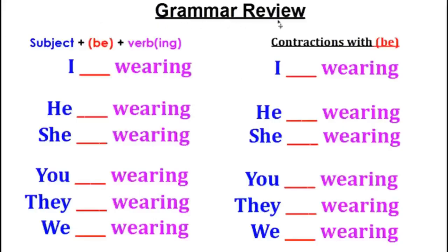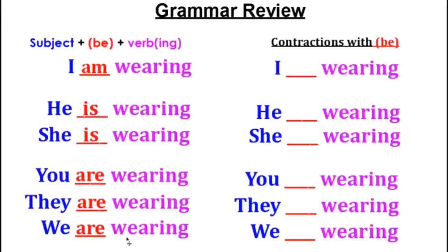Grammar review — the verb 'be' for each subject: I am wearing, he is wearing, she is wearing, you are wearing, they are wearing, we are wearing. And contractions with 'be': I'm, he's, she's, you're, they're, we're.